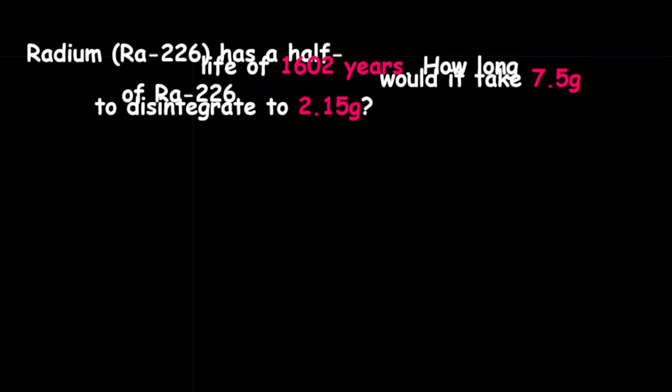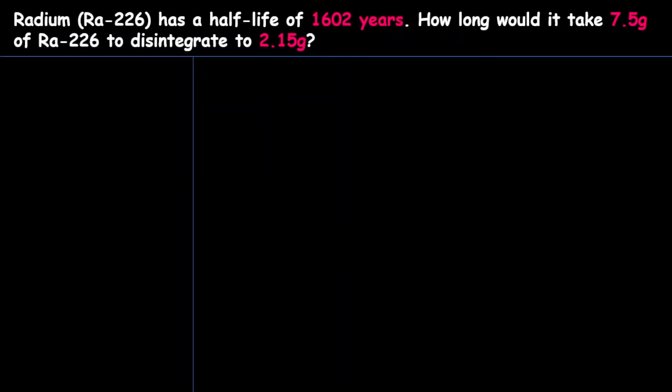Now once you get a question like this, the first thing I advise you to do is to write down the things that are given within the question or the known variables. And so from this question, we know that the half-life is 1,602 years, the original mass is 7.5 grams, and the final mass is 2.15 grams.